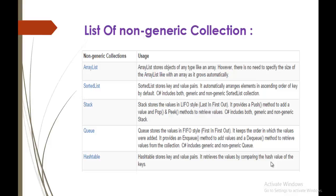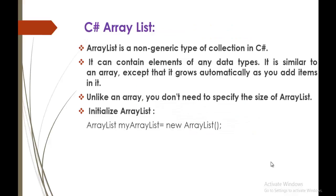ArrayList is a non-generic type of collection and it can contain elements of any data types — string, integer, float, double, or whatever. It is similar to an Array except that it grows automatically as you add an item. Unlike an Array, you don't need to specify the size of an ArrayList.